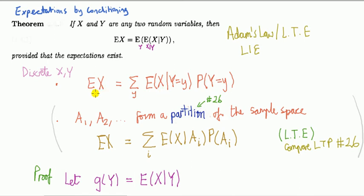Interpretation of this is that to compute the mean of x, it's a sum of the weighted average of the conditional expectations weighted by the probability of the thing you're conditioning on.